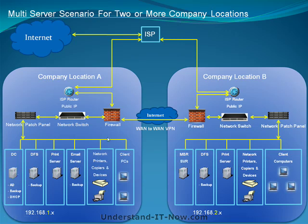In this scenario, we also divide up the server workload. At location A, the domain controller provides Active Directory services to manage user accounts, backup, and DHCP for distributing IP addresses. It also has its own file system using DFS — Distributed File System — which connects to the file system at location B, allowing file replication and synchronization between both sites. Each location will have its own print server, and ideally its own email server with replication as well.